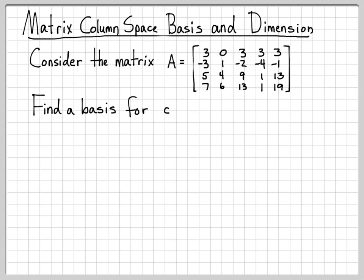So the column space is pretty easy to understand. It's basically just where can you go by taking linear combinations of columns.